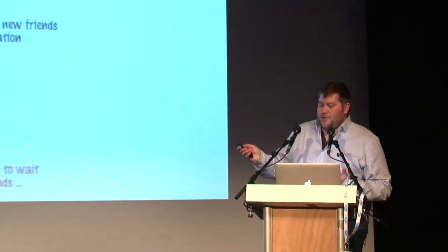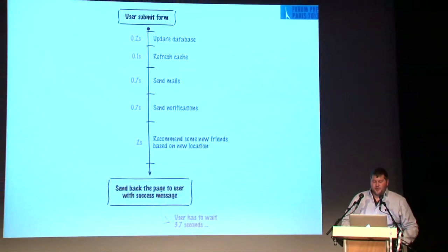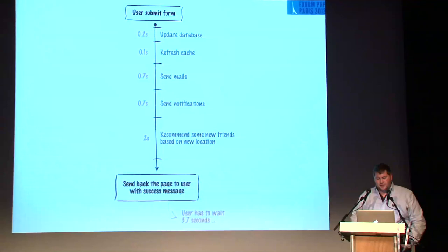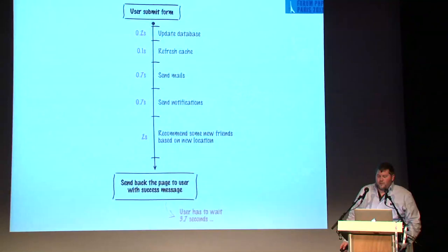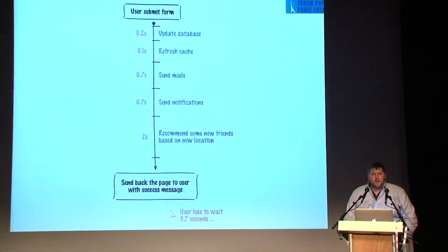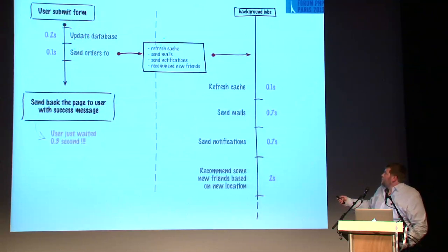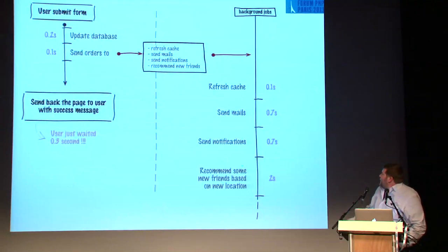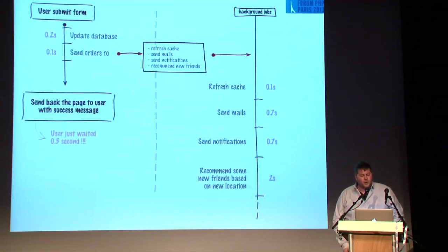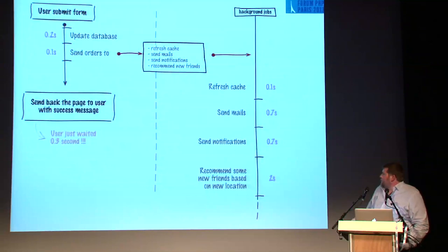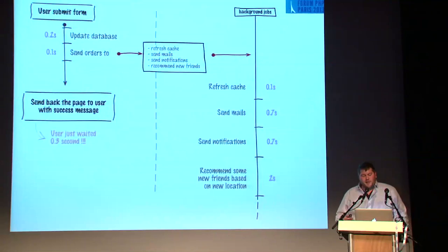Without background jobs, a user submits a form and you run several operations — database insert, cache refresh, send email, send notification, recommend friends — which individually are fast but cumulatively leave the user waiting 3.7 seconds. With background tasks and queues, you immediately return the response and do all the work while the user isn't waiting. You update the database, create a task for everything else, and the user only waits 300 milliseconds instead of 3.7 seconds — a saving of over 3 seconds of perceived latency.